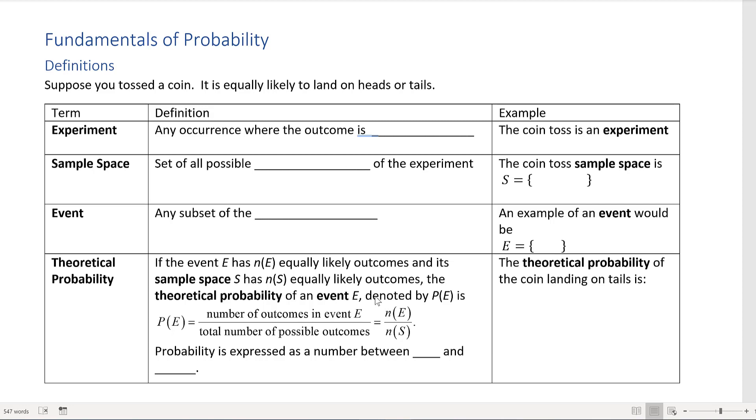Today's lesson is on the fundamentals of probability, so we need to go through some definitions. We're going to be using an example of tossing a coin, assuming it's equally likely to land on either heads or tails for our experiment.